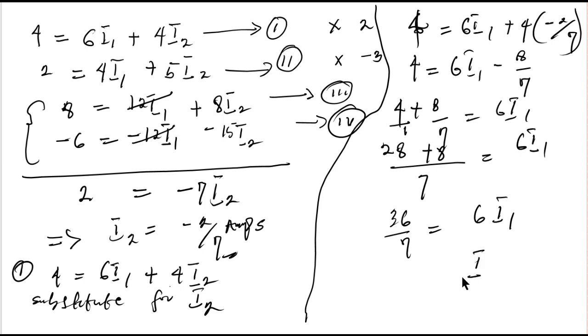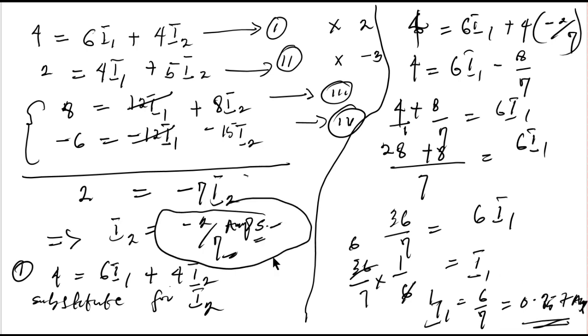From my calculator, 6 over 7 is the same thing as 0.857 amps. With this, I hope you understand how to work with KVL. In subsequent lessons, we'll see more complicated circuits. Thank you for staying with us and see you in our next class.